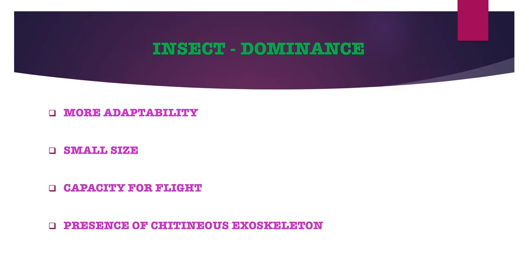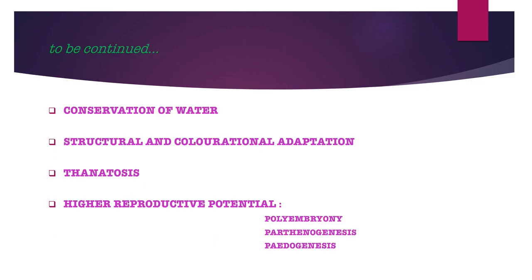Next is the presence of a chitinous exoskeleton. The insect body is covered with an outer cuticle called the exoskeleton, which is made up of chitin. This is light in weight and gives strength, rigidity and flexibility to the body, as well as controls the desiccation of water. Next is conservation of water: insects utilize metabolic water and reabsorb water from fecal matter.